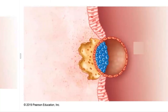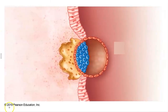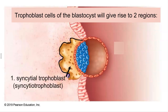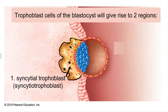Once the blastocyst contacts the endometrium and starts implanting, the trophoblast differentiates into two regions. The yellow area is known as the syncytial trophoblast. It is the region first contacting the endometrium and aggressively burrowing into it. The trophoblast cells lose their boundaries — they merge together so that each circular structure is a nucleus. This is a multi-nucleated cytoplasmic mass that's aggressively digging its way into the endometrium.